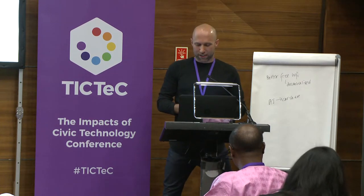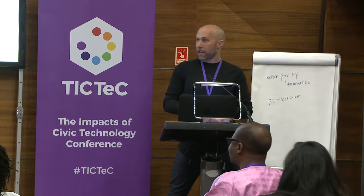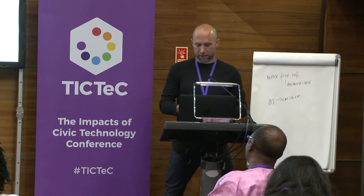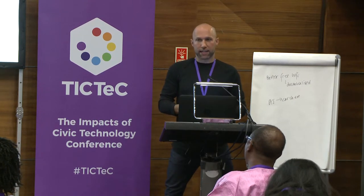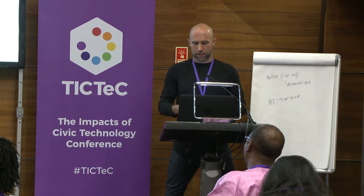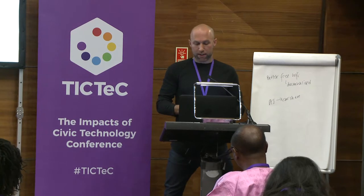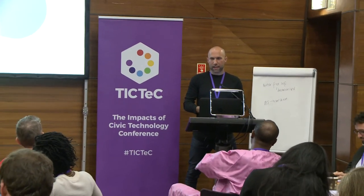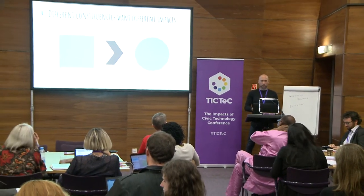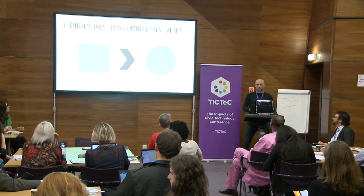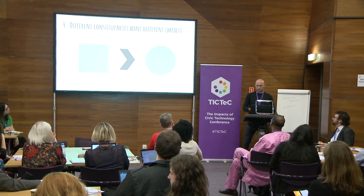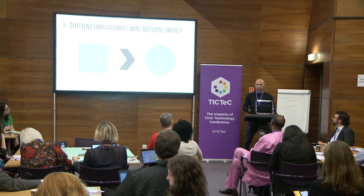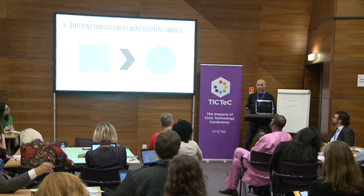If you've ever led an organization, you know you have different constituencies who want different things. When it comes to impact measurement, different constituencies may want to see completely different metrics before they consider you effective. Your actual theory of change might say you need more co-sponsors to pass legislation, but funders might require you to track media appearances, and the public wants compelling social media updates. Optimizing for one mode of impact might actually depress another — one organization was really proud of its API usage by developers, but their funders wanted media hits, forcing competing product priorities.